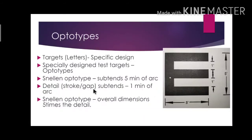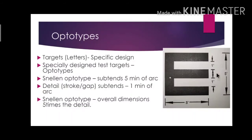The dimension of the overall Snellen optotype is 5 times the detail. So if the gap is 1 minute of arc, the whole letter is 5 times that — totalling 5 minutes of arc.